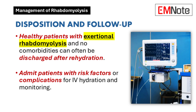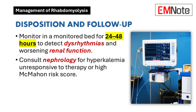Most healthy patients with exertional rhabdomyolysis and no comorbidities can be treated with oral or intravenous rehydration in the emergency department and discharged. However, patients with significant risk factors or complications should be admitted for intravenous hydration and monitoring. Admission to a monitored bed is recommended for at least the first 24 to 48 hours to detect dysrhythmias and worsening renal function. Nephrology consultation should be considered for patients with hyperkalemia unresponsive to therapy or those with a high McMahon risk score.